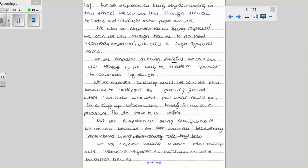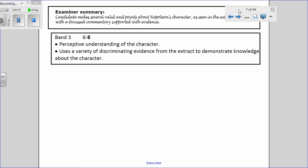They continued with other points about what the character of Napoleon is being like in the extract: demanding, respected, powerful, cruel. Each time they make a point, they embed quotations to support their saying. This candidate would have achieved full marks for the answer because they show a perceptive understanding of the character, make several valid points, and there's a focus commentary supported with evidence.